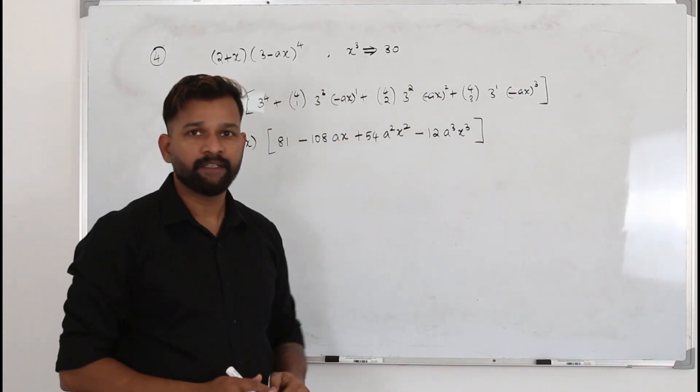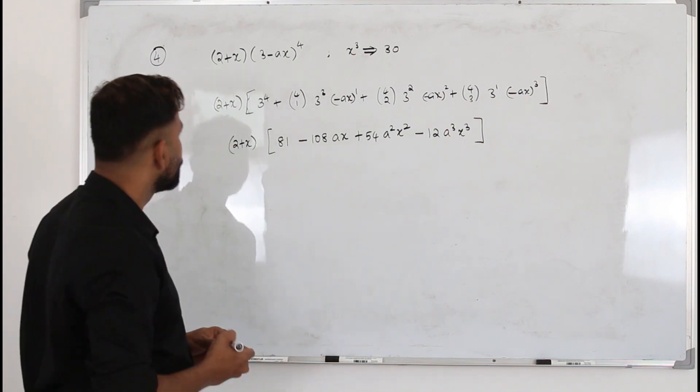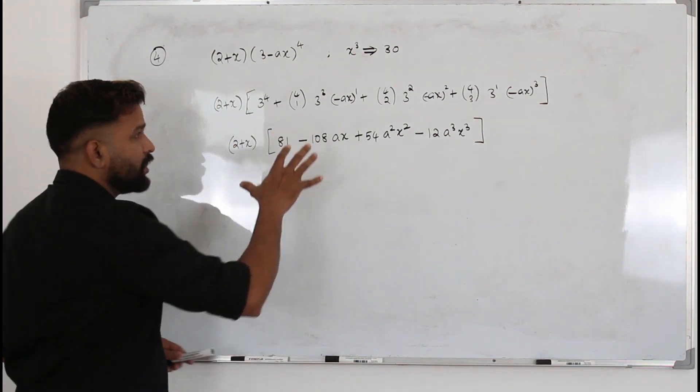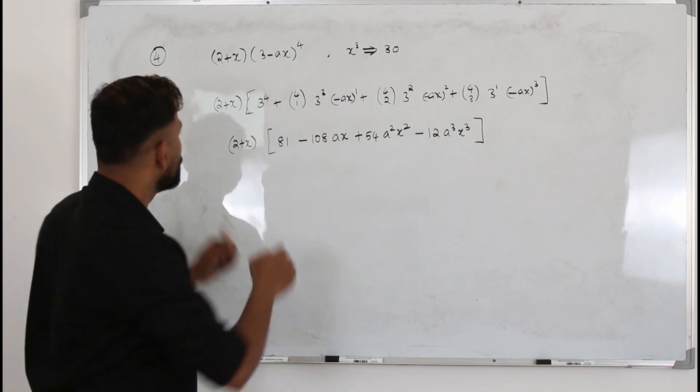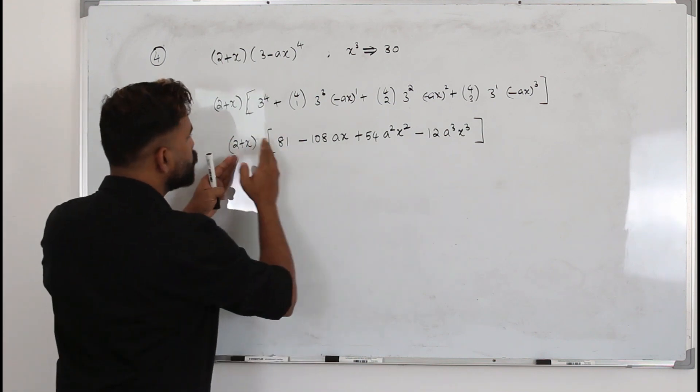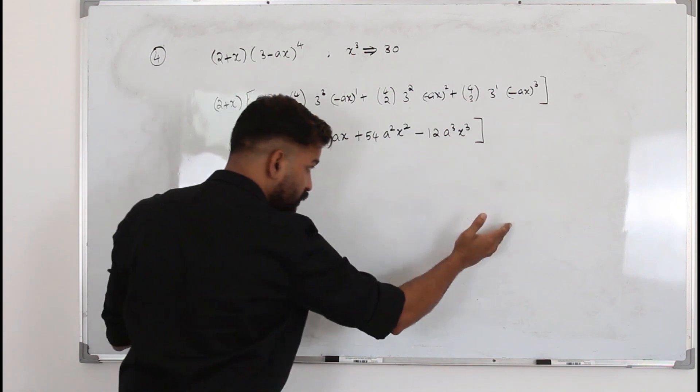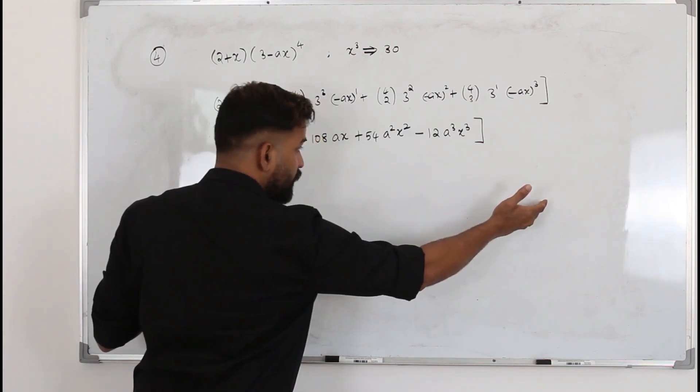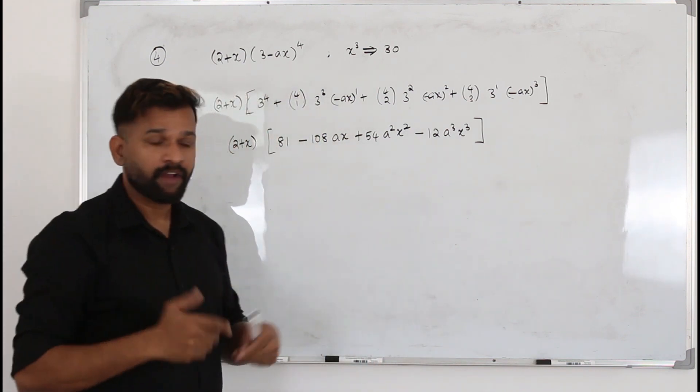You need to carefully simplify the terms. Now, listen to me very carefully. We are going to take the coefficient of x³. You can open the bracket, take 2 and multiply everything, take x and multiply everything, write the expansion here, and then take coefficient of x³.